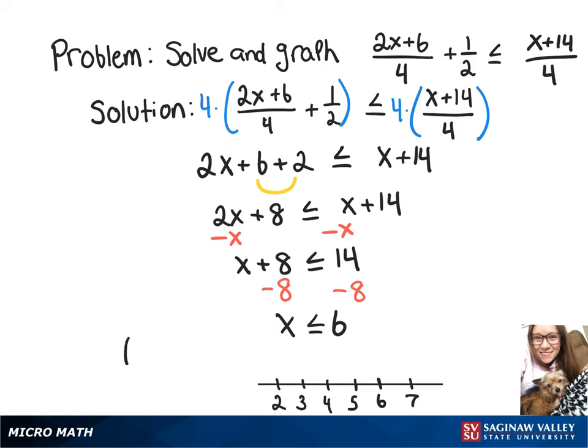So in our interval notation, we're going to have parenthesis, negative infinity, comma, 6 with a bracket. So we're going to have a closed circle on the 6 and an arrow pointing down to negative infinity.